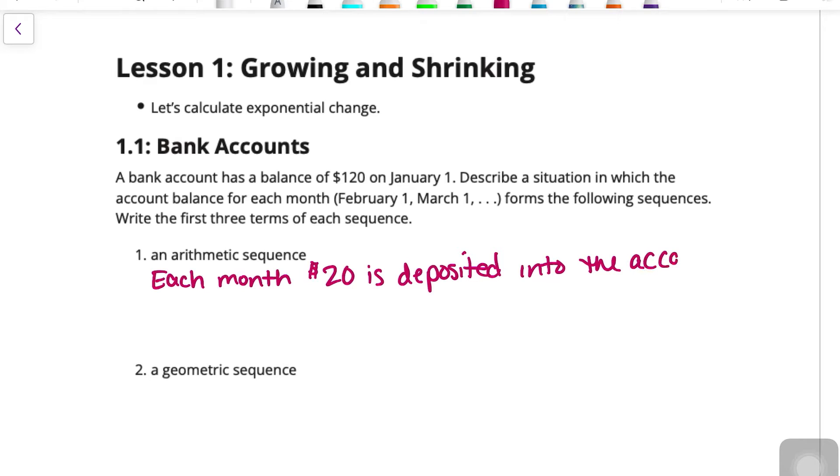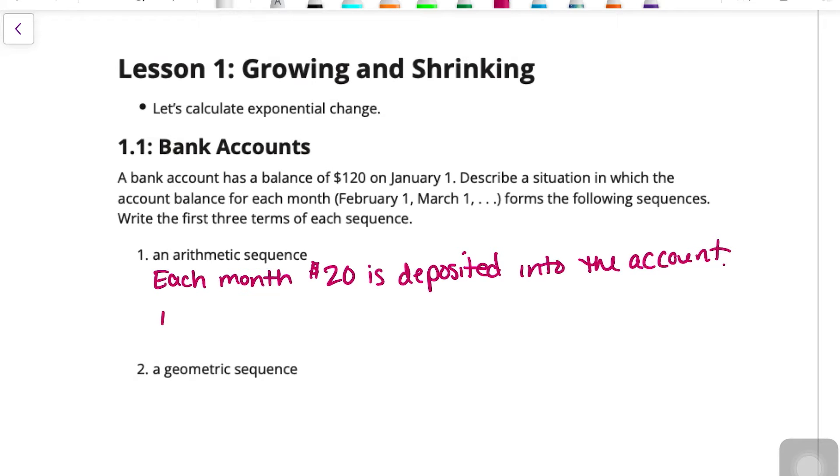All right, so what that means is we're not accruing any interest. This is just a checking account that doesn't accrue interest. And so the account starts with $120 in January. Then you would have $140 February 1st, $160 in March. And so those would be the first three terms, and then you'd continue to add $20 every time.